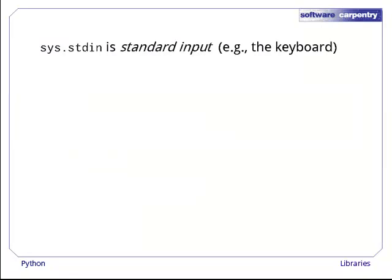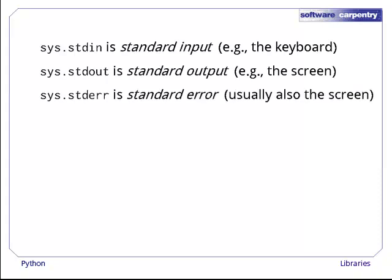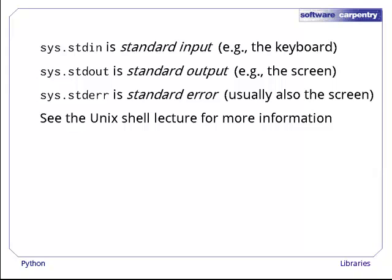Sys also creates variables to connect programs to standard I/O channels. sys.stdin is standard input, which is usually connected to the keyboard. sys.stdout is standard output, which by default is connected to the screen. And sys.stderr is standard error, which is also usually connected to the screen. For more information on what these are for and how to use them, please see the lecture on the Unix shell.